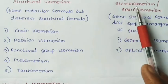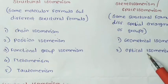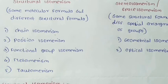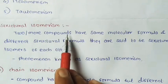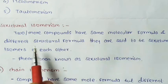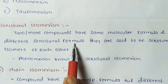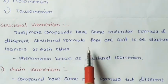Stereo isomerism is of two types: geometrical isomerism and optical isomerism. Now we will study in detail about structural isomerism. Structural isomerism means two or more compounds have the same molecular formula and different structural formula — they are said to be structural isomers of each other.